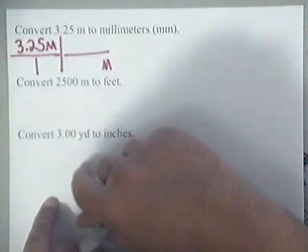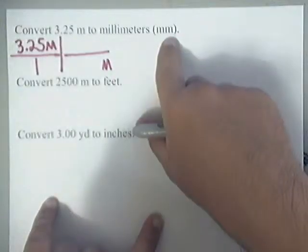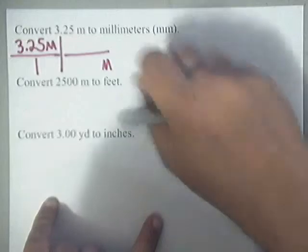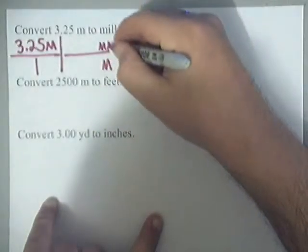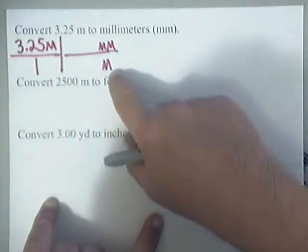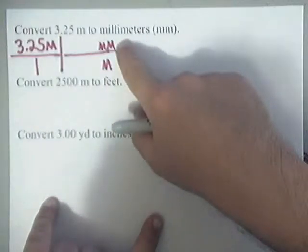Now, what you're looking for will always eventually end up on top, which in this case, we're converting to millimeters, so mm will be on the top. Well, since we've already said that meters is bigger than millimeters, then the meters will get the one.